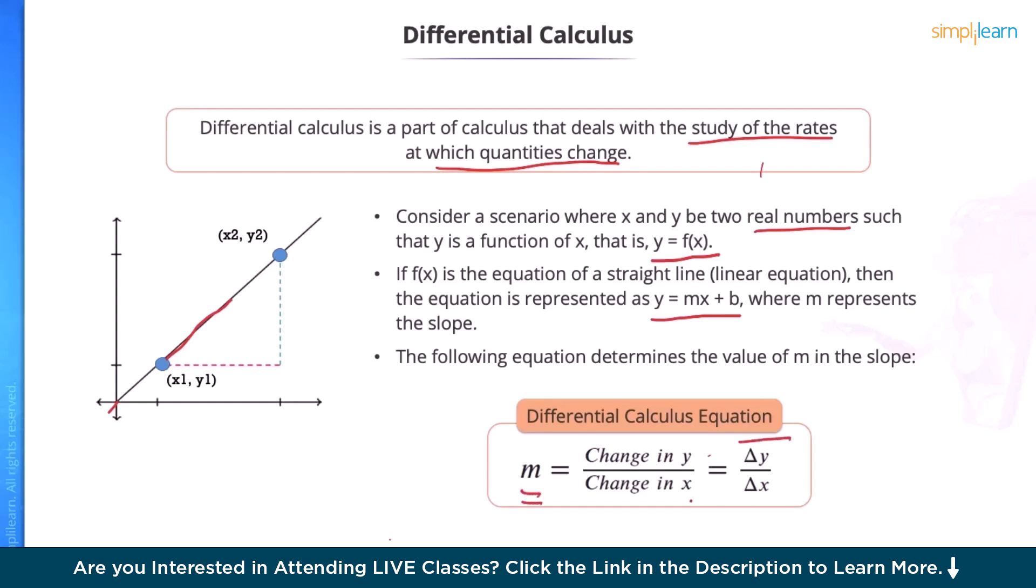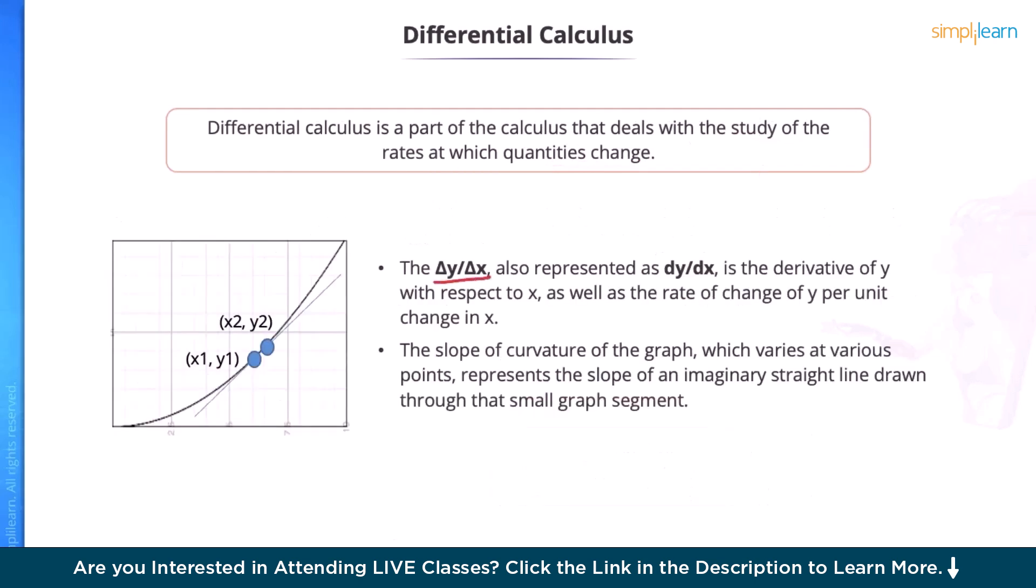It can also be written as Δy/Δx. The Δy/Δx is also represented as dy/dx. This is the derivative of y with respect to x, as well as the rate of change of y per unit change in x. The slope of a curvature of the graph, which varies at various points, represents the slope of an imaginary straight line, like this line, which we are drawing over here through the small graph segment (x1, y1) and (x2, y2).